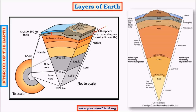The asthenosphere, being ductile, helps the movement of crustal plates, which explains tectonic plate theory. It is also the major medium through which convection cycles are transferred from the asthenosphere to the crust.